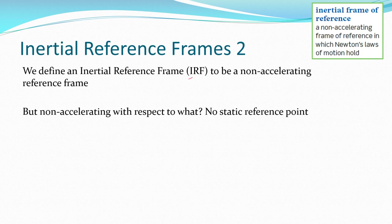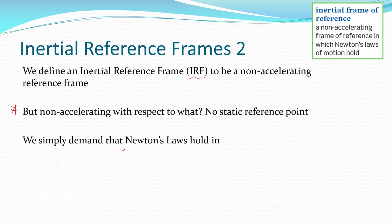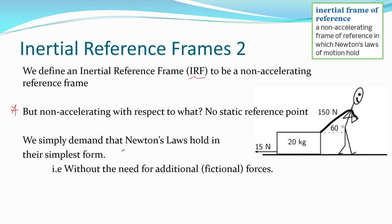So an inertial reference frame is what we consider to be a non-accelerating reference frame and that's mainly what we deal with in a lot of our work. It's when you get onto special relativity that the accelerating reference frames start to come into it. But note this point: non-accelerating with respect to what? There is no static reference point. We just simply pick the reference point we want. That man could be walking along, the reference frame could be this particular ground, but if you're sitting on this box you will see the ground moving away from you in that direction as the man walks forward. It's all to do with your frame of reference.